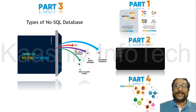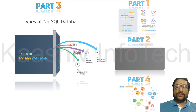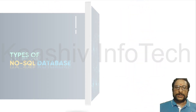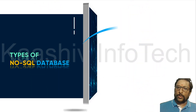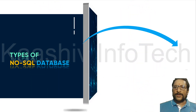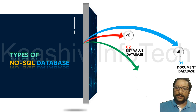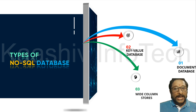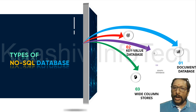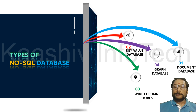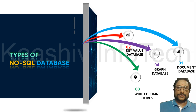Here is part three. I am going to talk about the types of NoSQL databases. There are four major types available: document database, key-value database, wide column stores, and graph database.